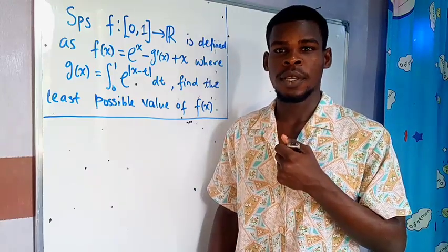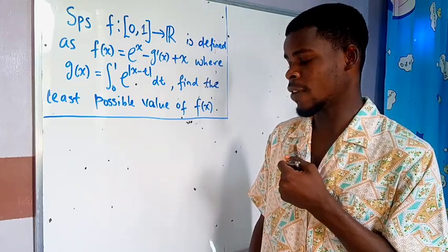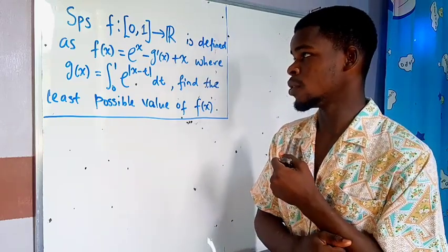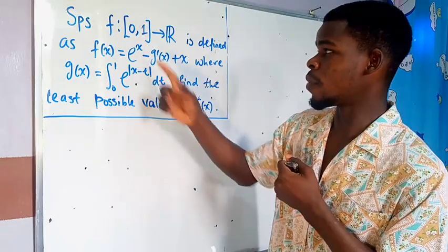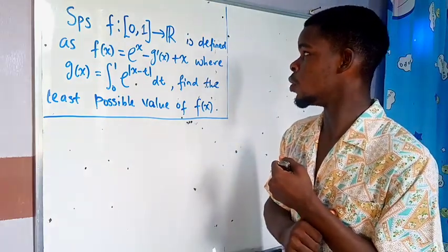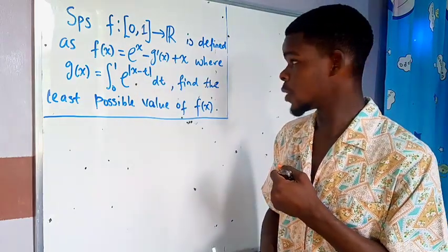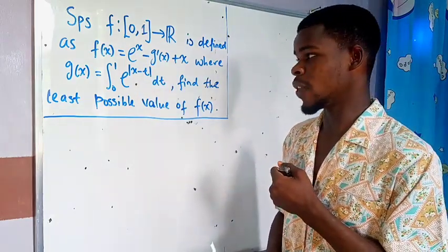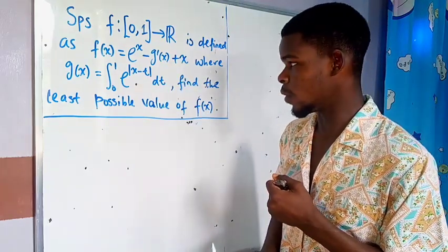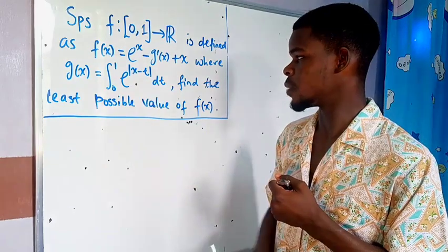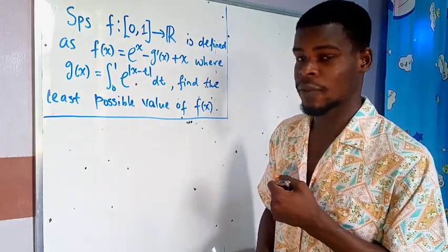Hello and welcome to my channel. In this video, we want to solve this practice question for the JEE Advanced integral type question. We suppose a function f, a real-valued function from the closed interval [0, 1], defined to be e to the power x minus g prime of x plus x, where g(x) is the integral from 0 to 1 of e to the power of the absolute value of x minus t, dt. We have to find the least possible value of f(x).